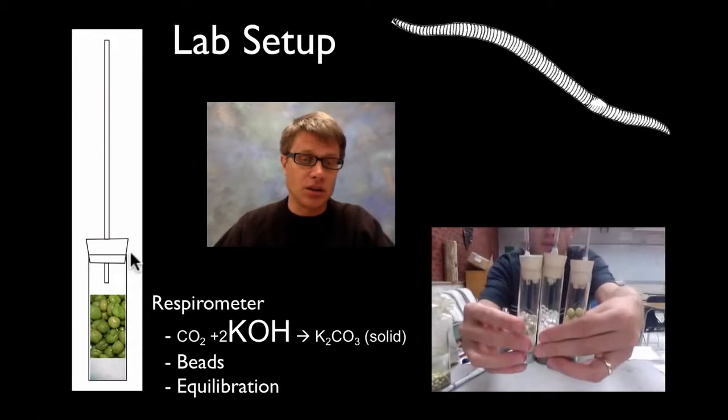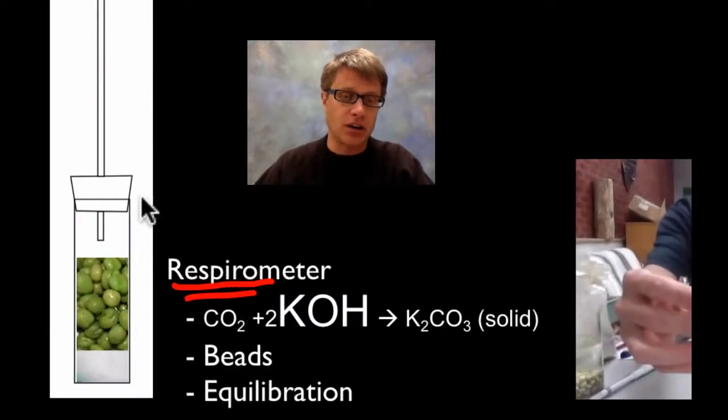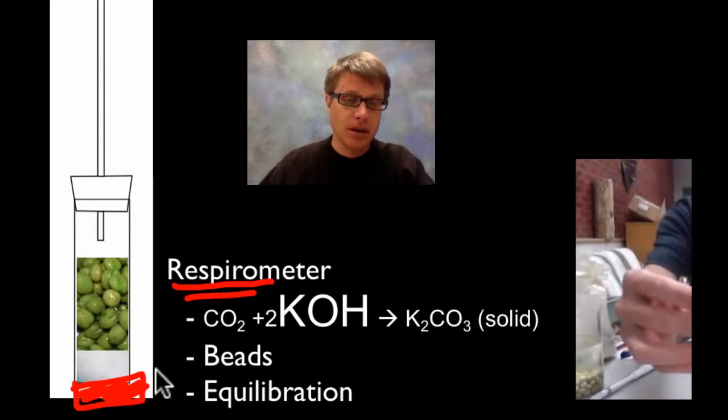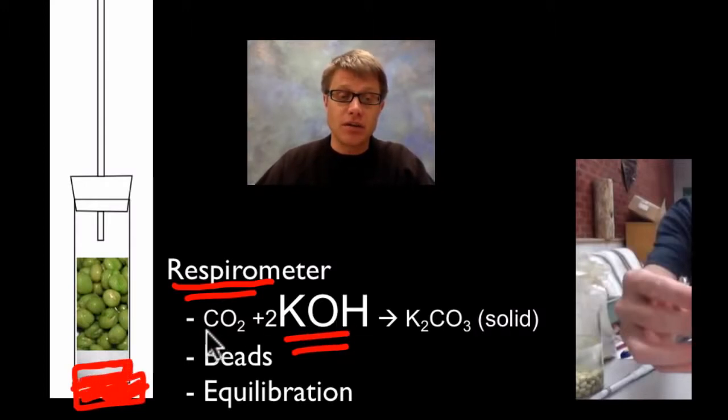So what do we use to measure this? We're using something called a respirometer. A respirometer has important parts to it. It's got a glass jar here on the bottom. Usually I'll put weights on the bottom so it's going to sink. On the bottom we're going to have some cotton, and that cotton is going to have this chemical in it called potassium hydroxide. Potassium hydroxide will be at the bottom in some absorbent cotton. Basically what potassium hydroxide does is if it's ever in the presence of carbon dioxide it will convert that into a solid.